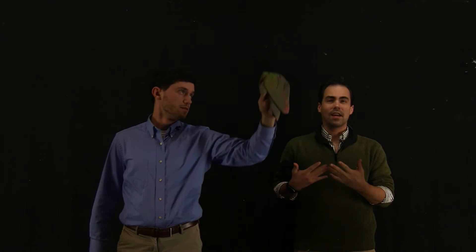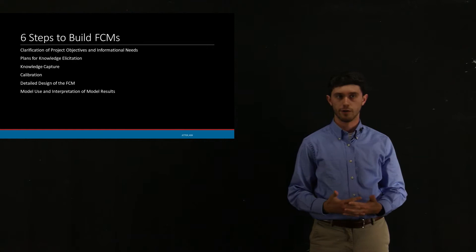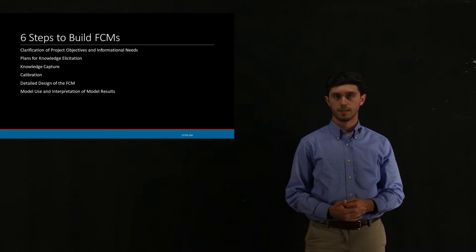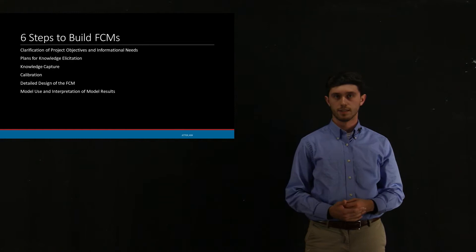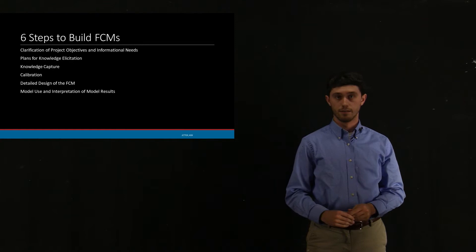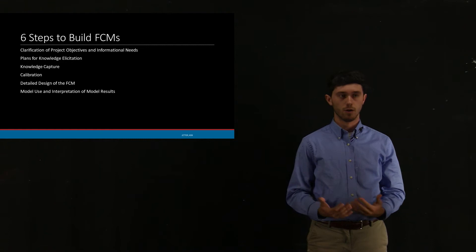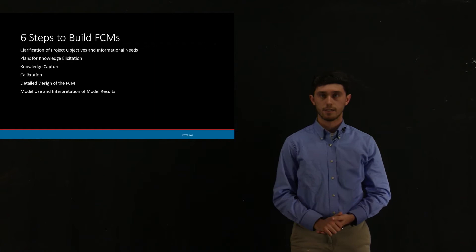So now I'm going to turn things over to Max. And now that we've seen how exactly these FCMs are made, we're going to look at more details for them. And so there's basically six steps to building FCMs. You need to clarify your objectives and the informational needs, plan for how you're going to elicit the knowledge from the people you're interviewing, all the different experts or stakeholders. You have knowledge capture, which is the process that includes the elicitation activities themselves. So like the brainstorming, the rich picture and all of that. The calibration includes the translation of the causal cognitive map into adjacency matrices and the output and input vectors and approaches to dealing with the different time steps we have for the FCMs. And then model use and interpretation of results is just kind of where we see the big picture from our FCM. So see how different factors will actually affect obesity in our case here.